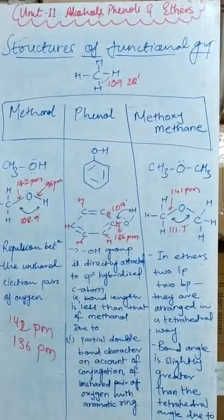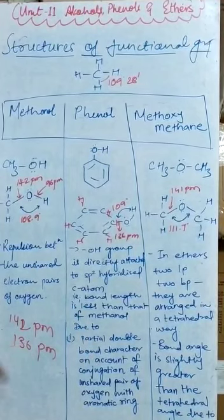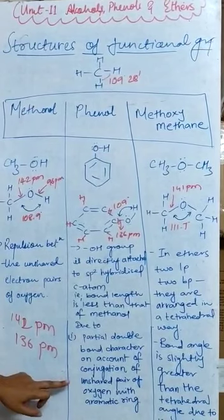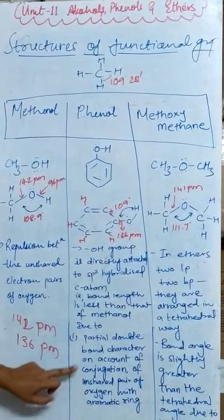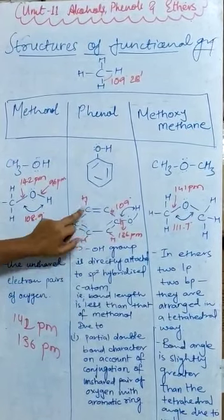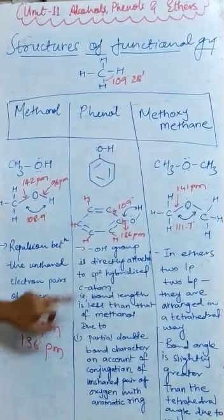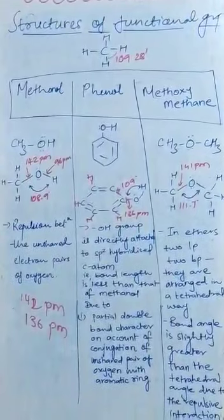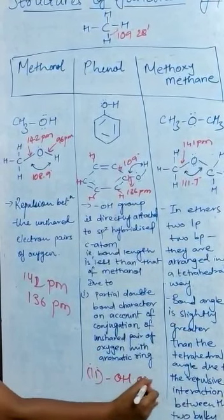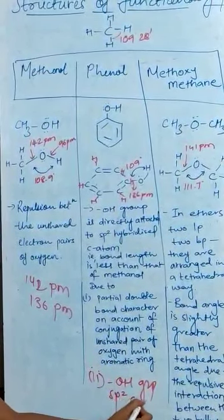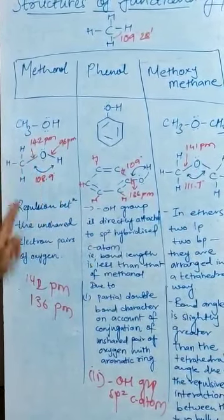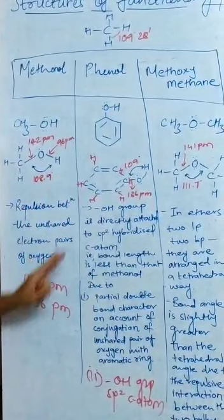The other reason for phenol's shorter bond length is the partial double bond character on account of the conjugation of the unshared pair of oxygen with the aromatic ring. This is a conjugated double bond — it is alternating. So due to conjugation, the bond length is 136 picometers. Both reasons — SP2 hybridized carbon and conjugation — account for the bond length reducing from 142 to 136 picometers.